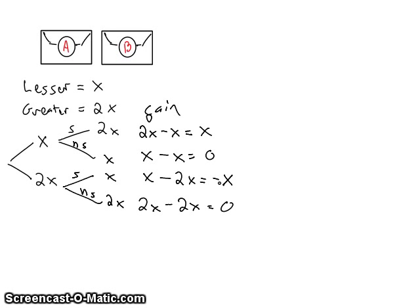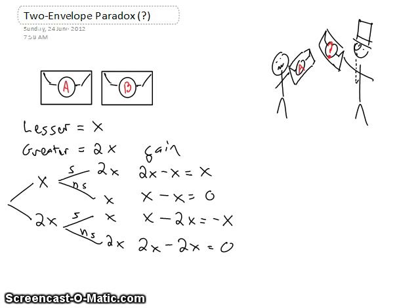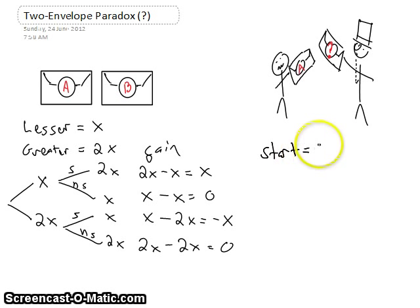Now where the paradox comes in is in the way that people choose to think about this problem. To illustrate this, there's another situation. In this case, we already have an envelope — we'll call it envelope A. Some guy comes along and says, 'Here's another envelope. There's a 50-50 chance that it contains either twice the amount of money in your envelope, or half the amount of money in your envelope. Would you like to trade?' So we'll say that we start with a certain amount of money, we'll call it x.